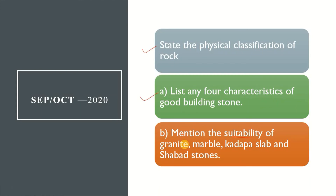For 4 characteristics of good building stones you can list: structure, appearance, texture, weathering resistance, fire resistance, and cost — choose any 4. The suitability question covers where and how granite, marble, kadapa slab, and shabath stones are used.